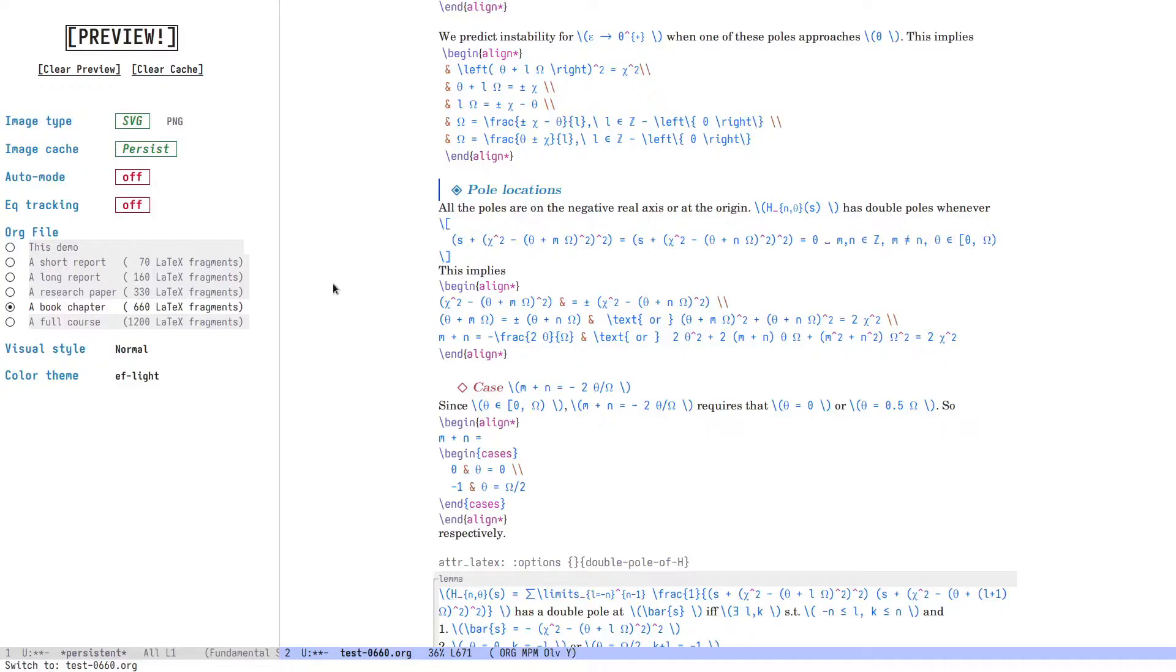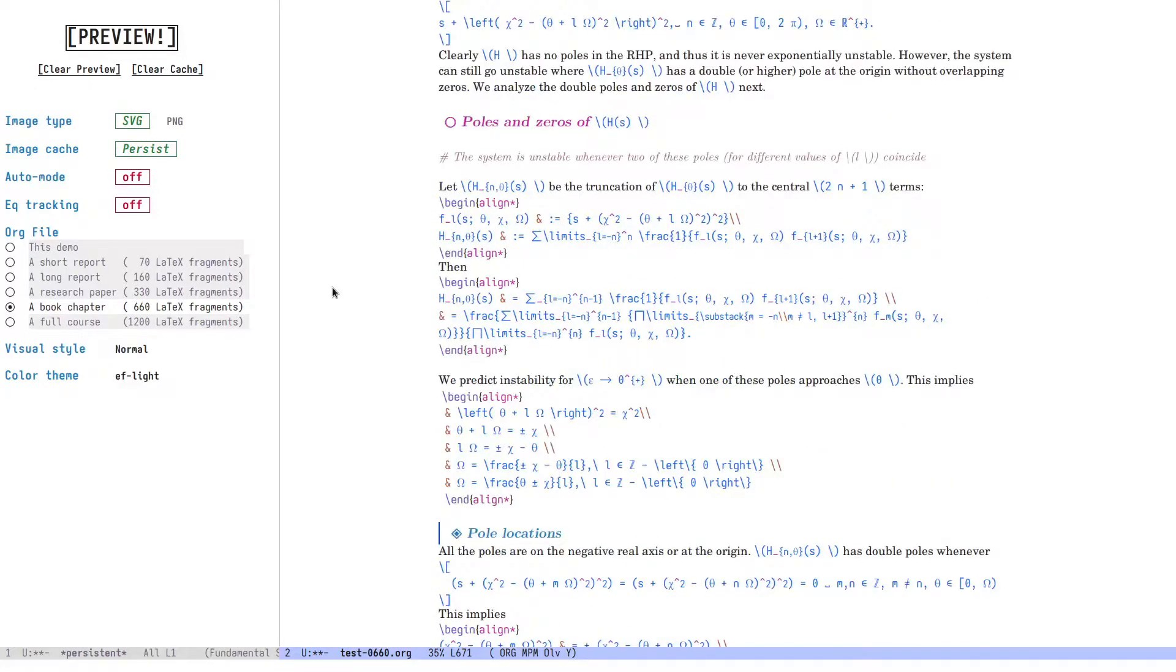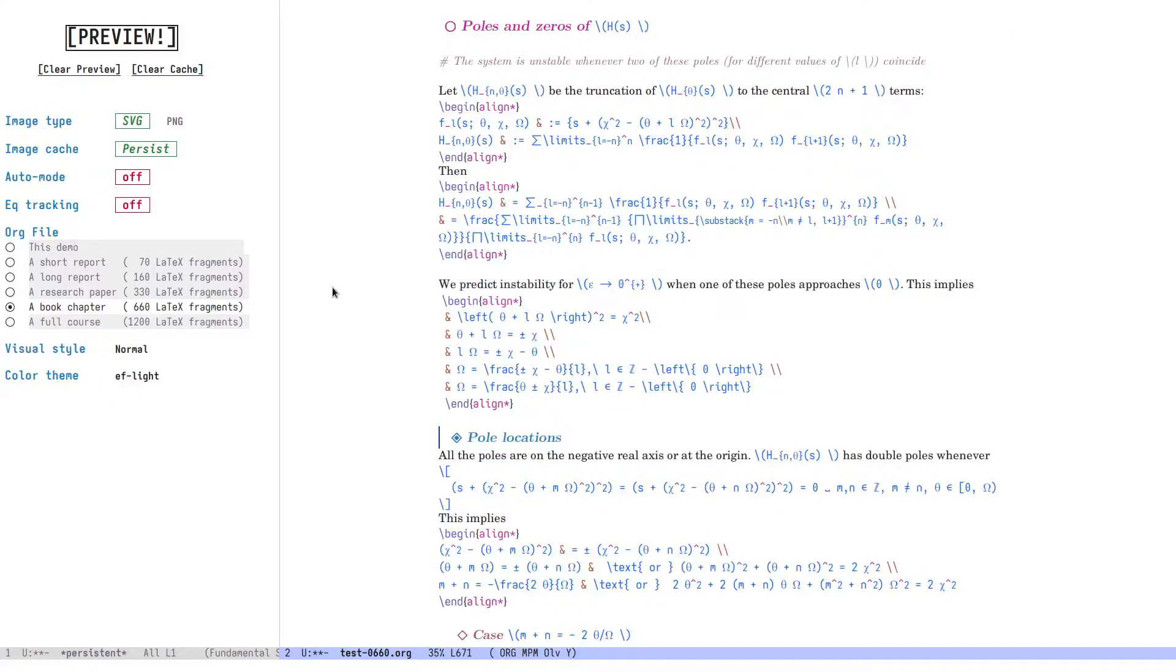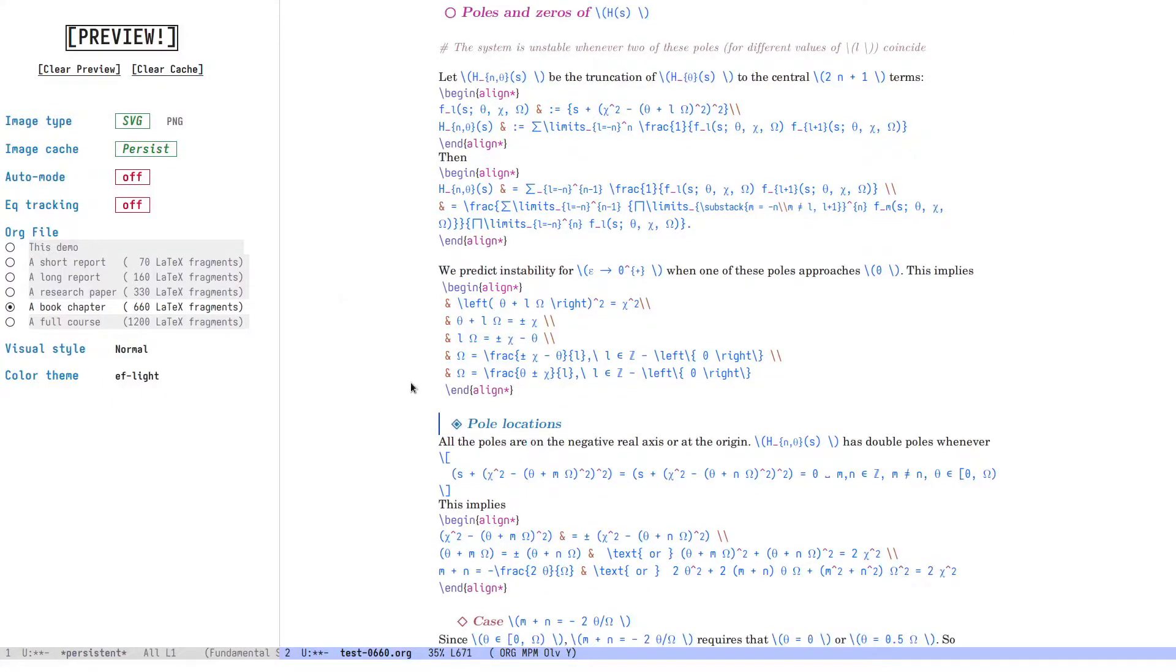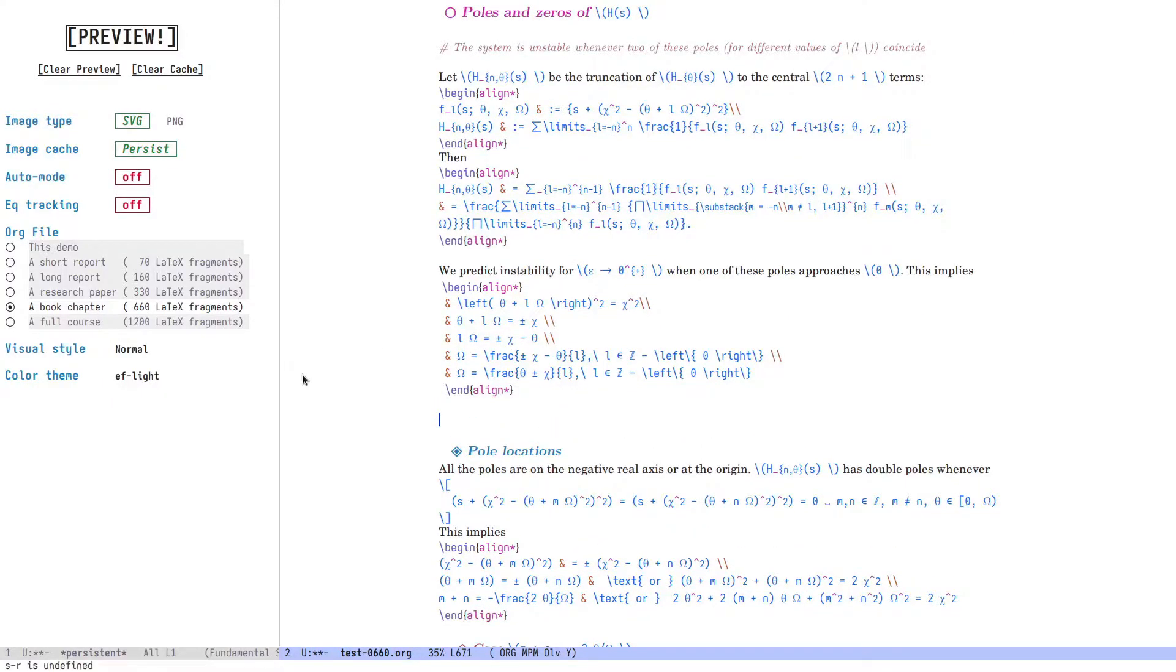In this roughly 30 page document with 660 math fragments, preview generation is going to be perceivably slower. This gives us a good opportunity to demonstrate that the process is now asynchronous. I'm going to clear the preview image cache. Then hit the preview button and try to use Emacs while the images are being generated.